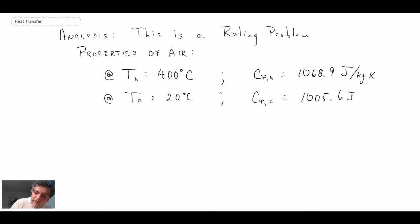When we're dealing with the effectiveness-NTU method, we have to determine which is the minimum fluid. The mass flow rates are identical here, so the minimum one is going to be the one with the lower specific heat, and that is going to be our cool fluid. So that is C-min, and then that will be C-max.